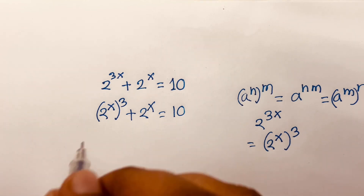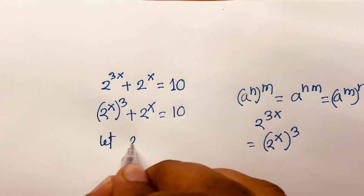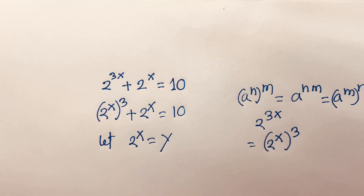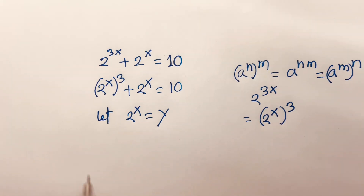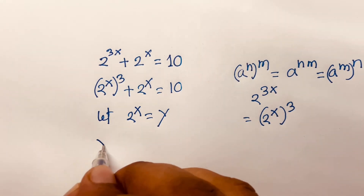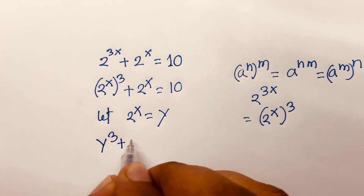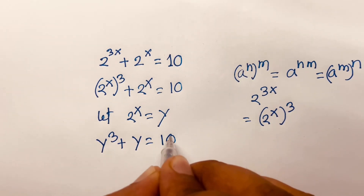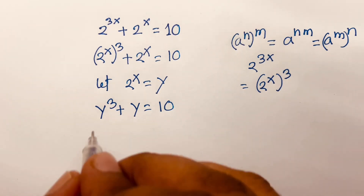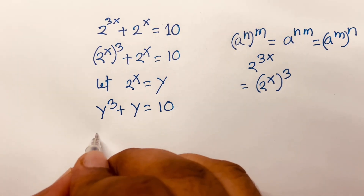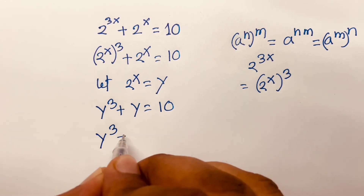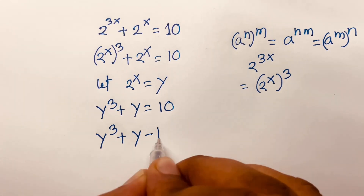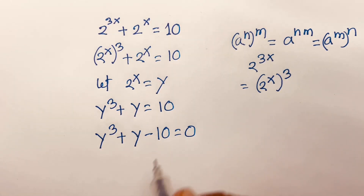Let 2 to the power x equal y. Then I can say y cubed plus y is equal to 10. This equation becomes y cubed plus y minus 10 is equal to 0.